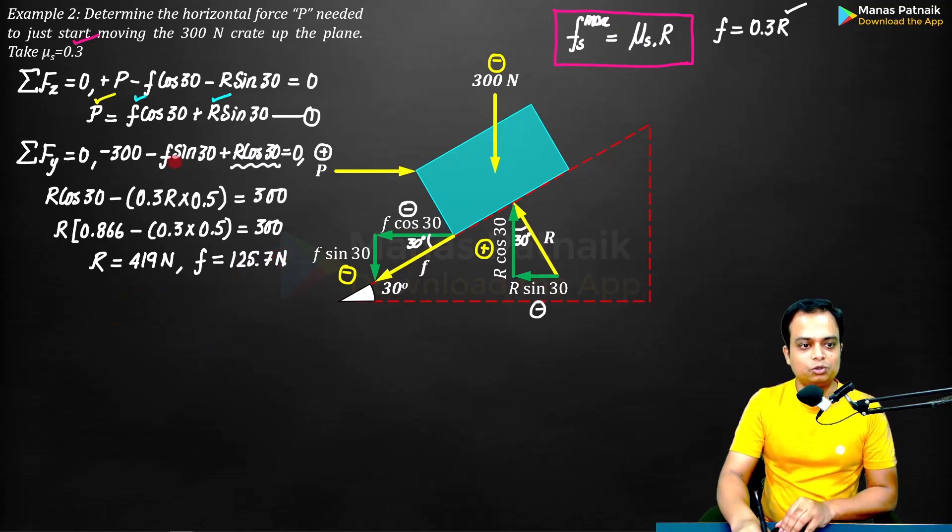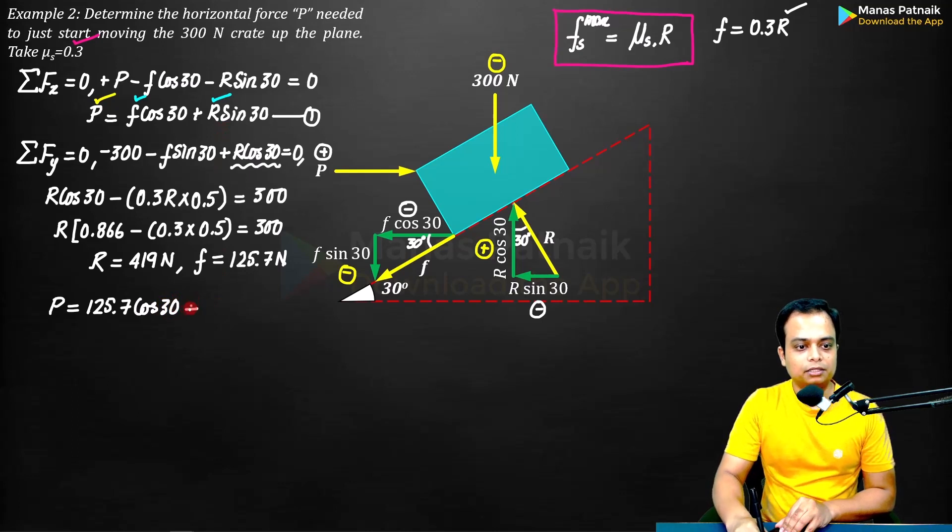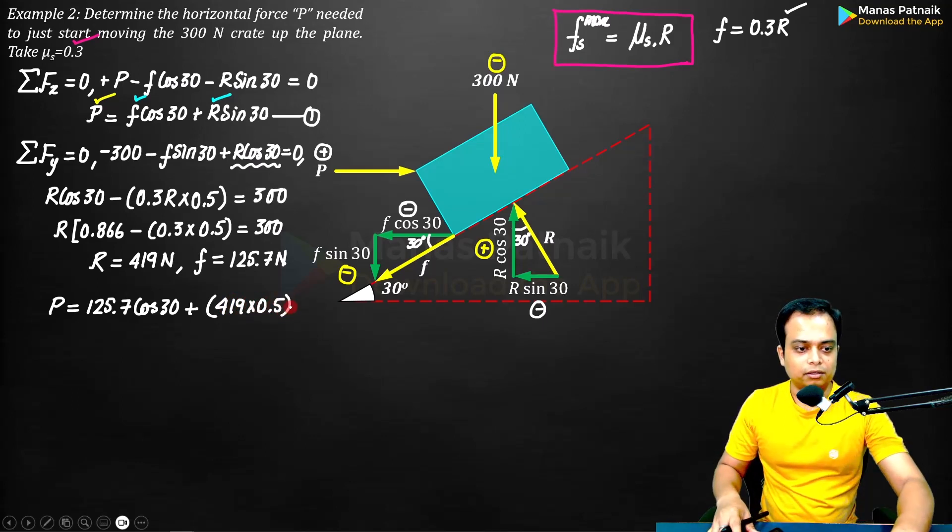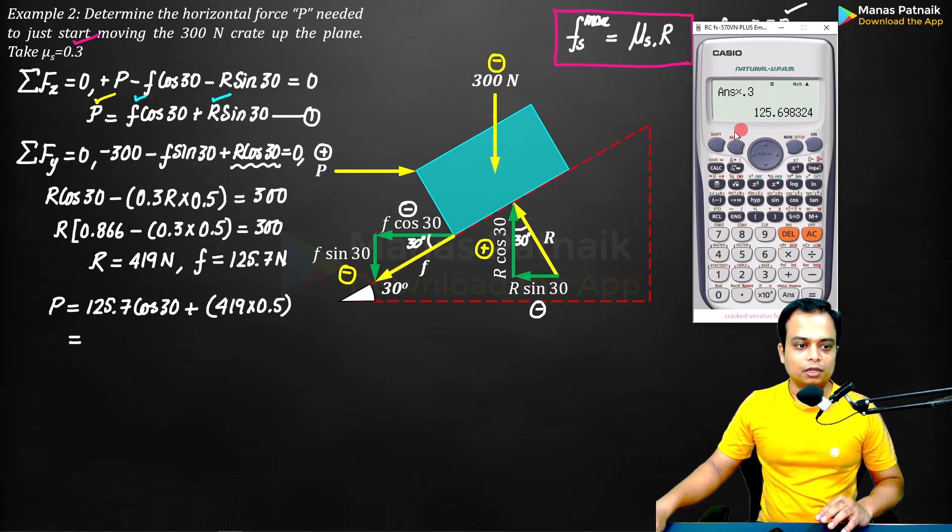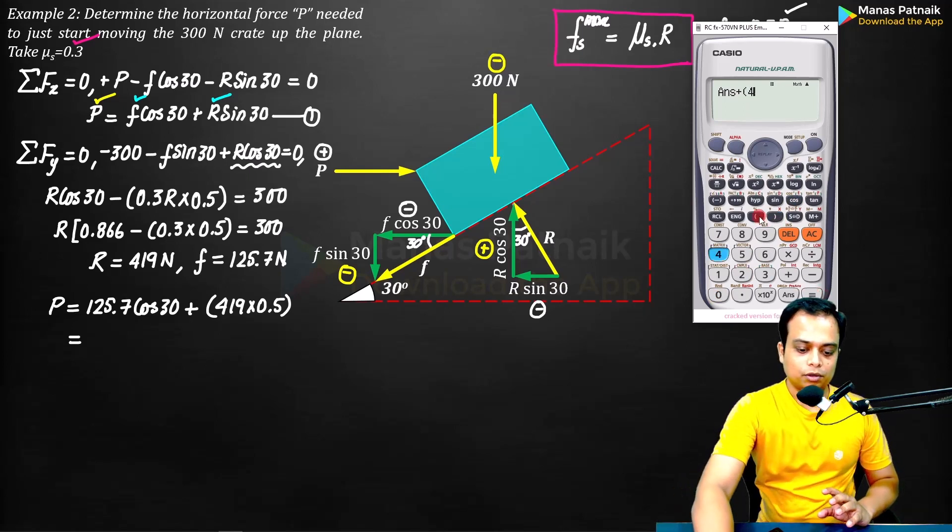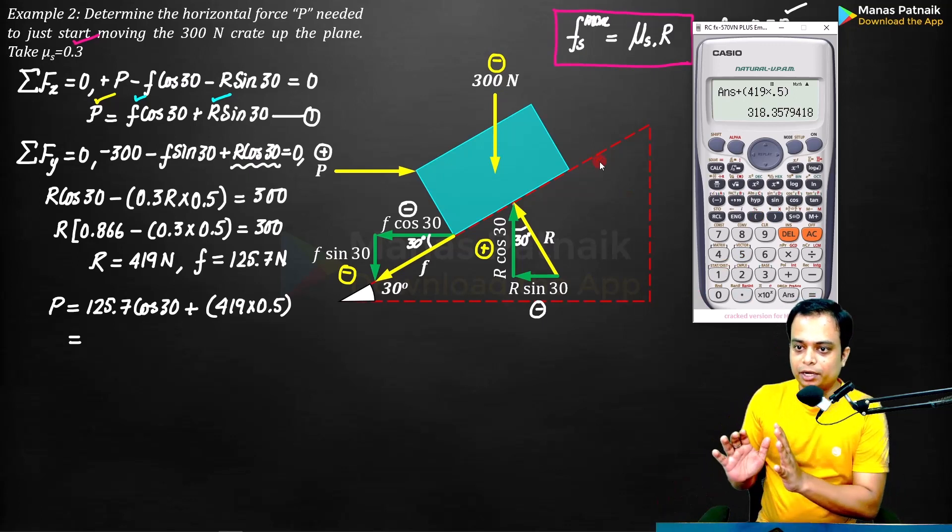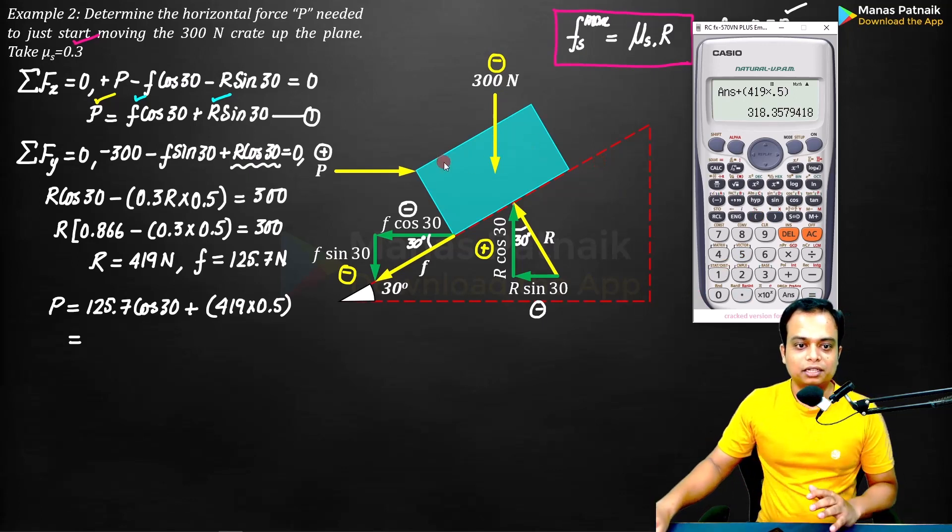Now simply put these two values into this equation. So P is going to be finally equal to 125.7 cos 30 plus R sin 30. Sin 30 we know very well, it is 0.5. Just do the math, this is going to be very simple. 125.7 into cos 30, plus 419 times 0.5, close the bracket, hit enter. 318.35 is the force that you need to apply over here.